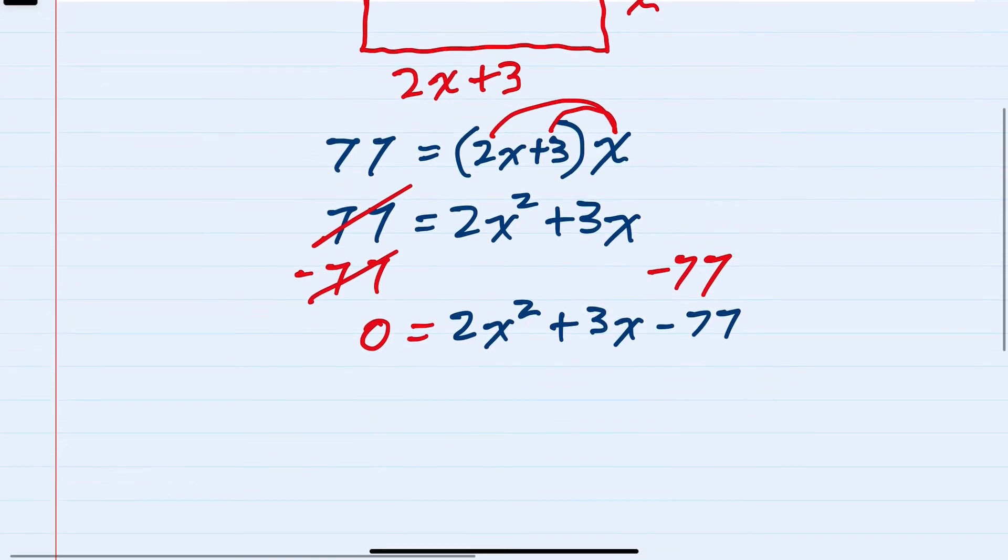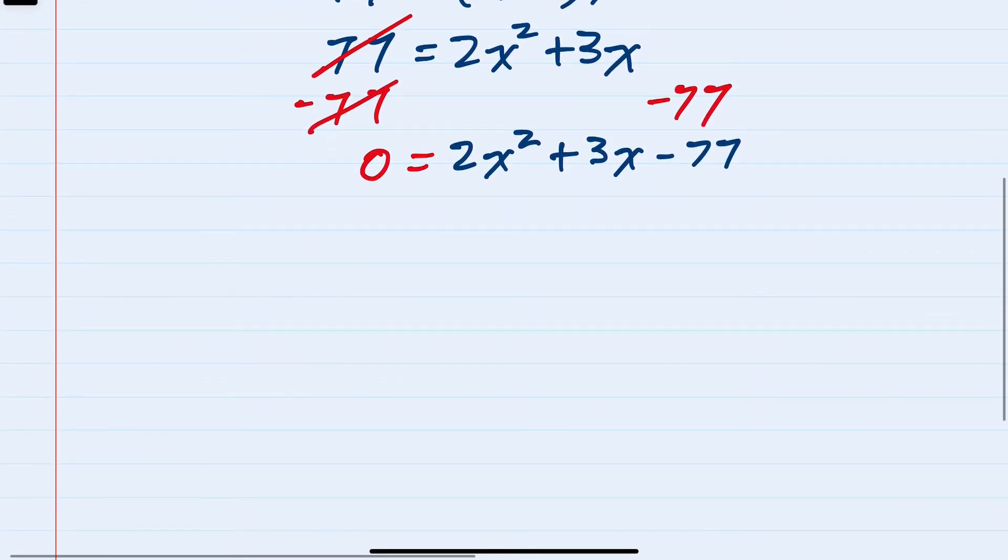Having a quadratic equal to 0, we can now solve by first factoring the quadratic. So 0 on the left hand side. Factoring this quadratic, since the first term is 2x squared, using trial and error, there's only one combination, 2x and x, that would multiply to 2x squared.